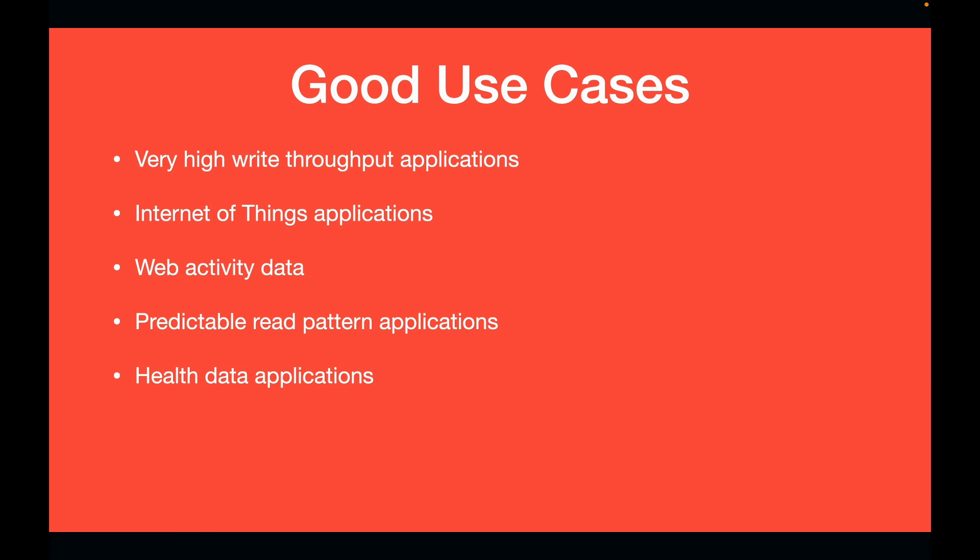Lastly, health data applications are a good use case for the same reason as IoT. An Apple Watch measuring heart rate almost every second generates very frequent writes that need to be recorded quickly — Cassandra handles this well due to its high write throughput. That's all for today. Hopefully this gave you a better idea of how Cassandra works. In the future, I'll have a deeper video on Cassandra's internals and data structures. Let me know if you have questions, and I'll catch you all in the next one.